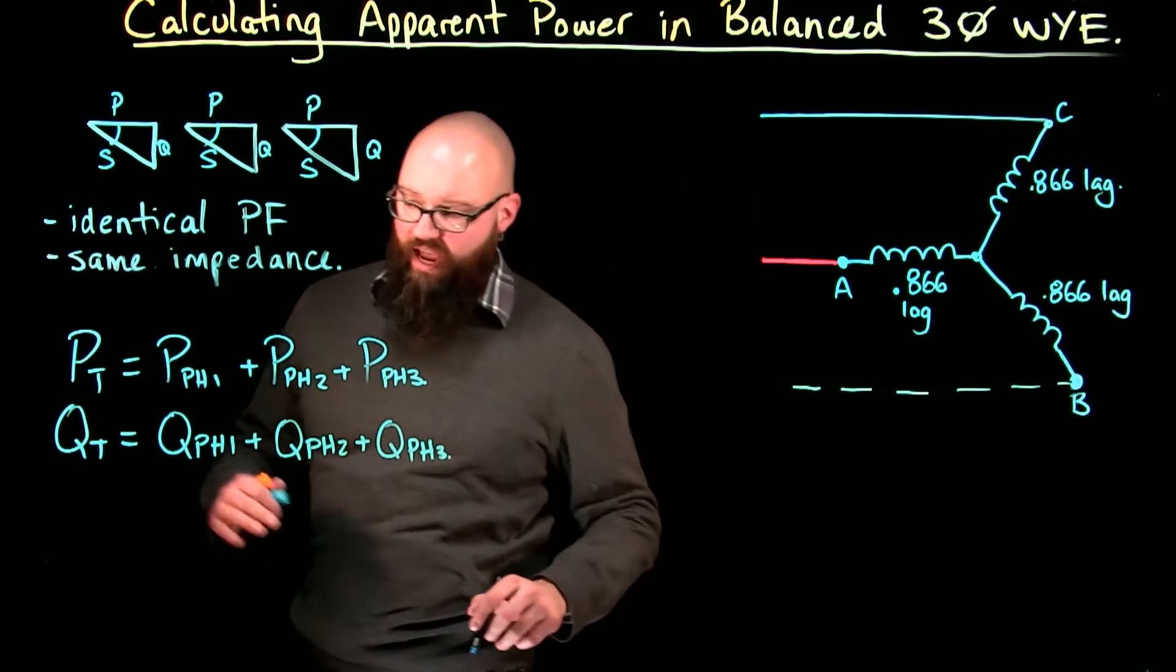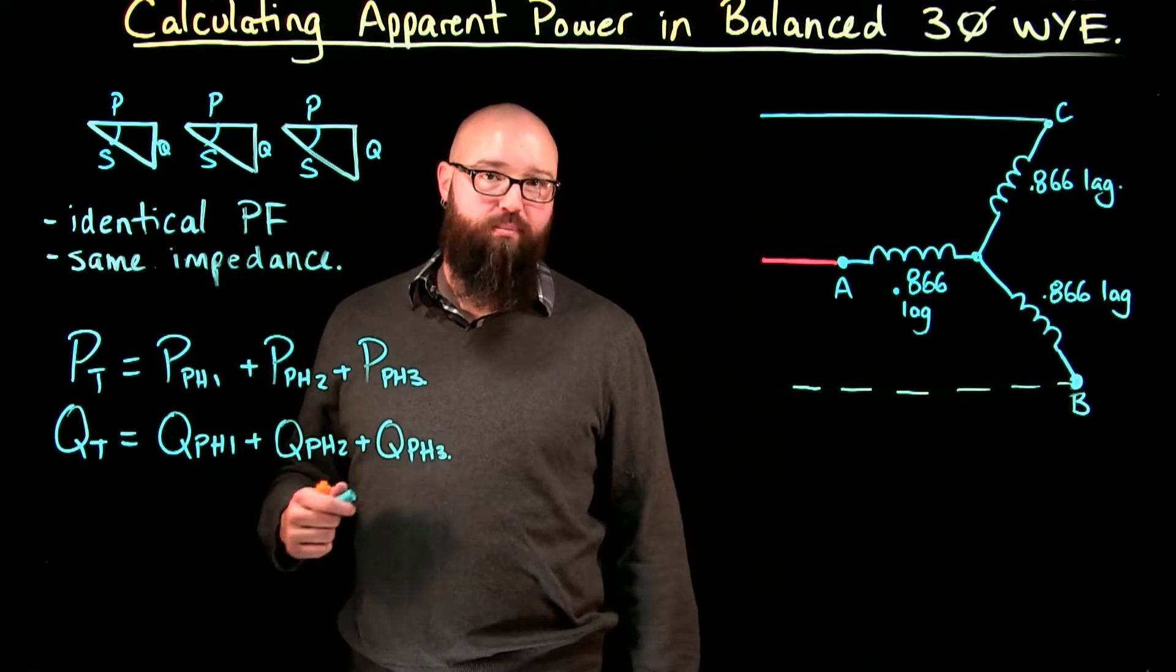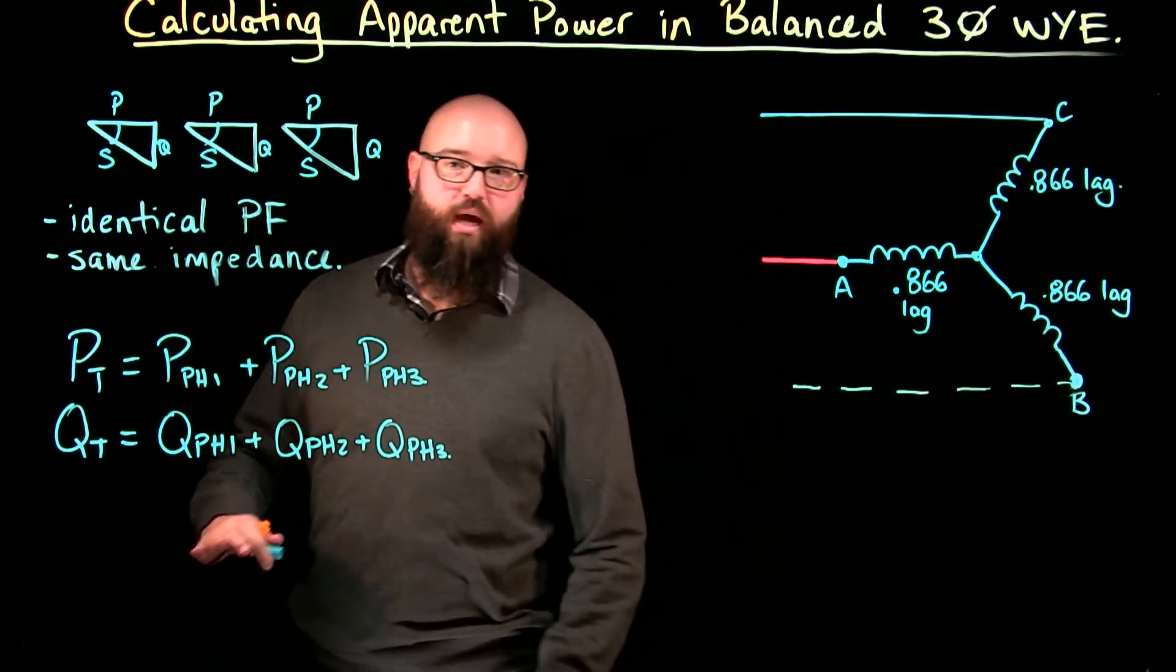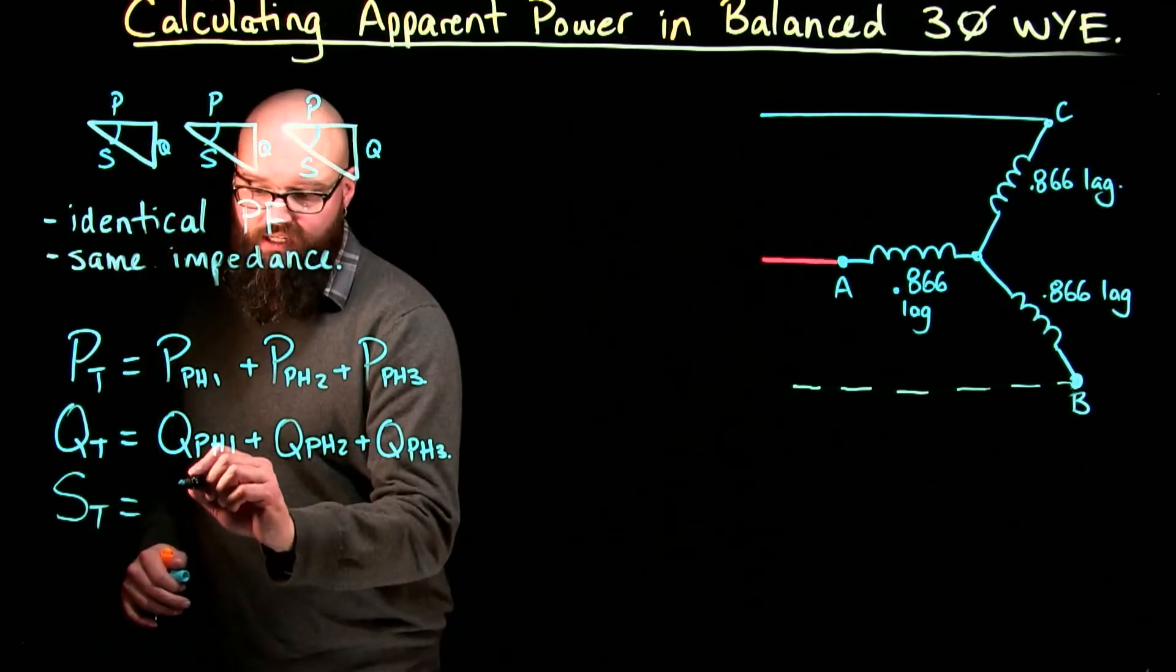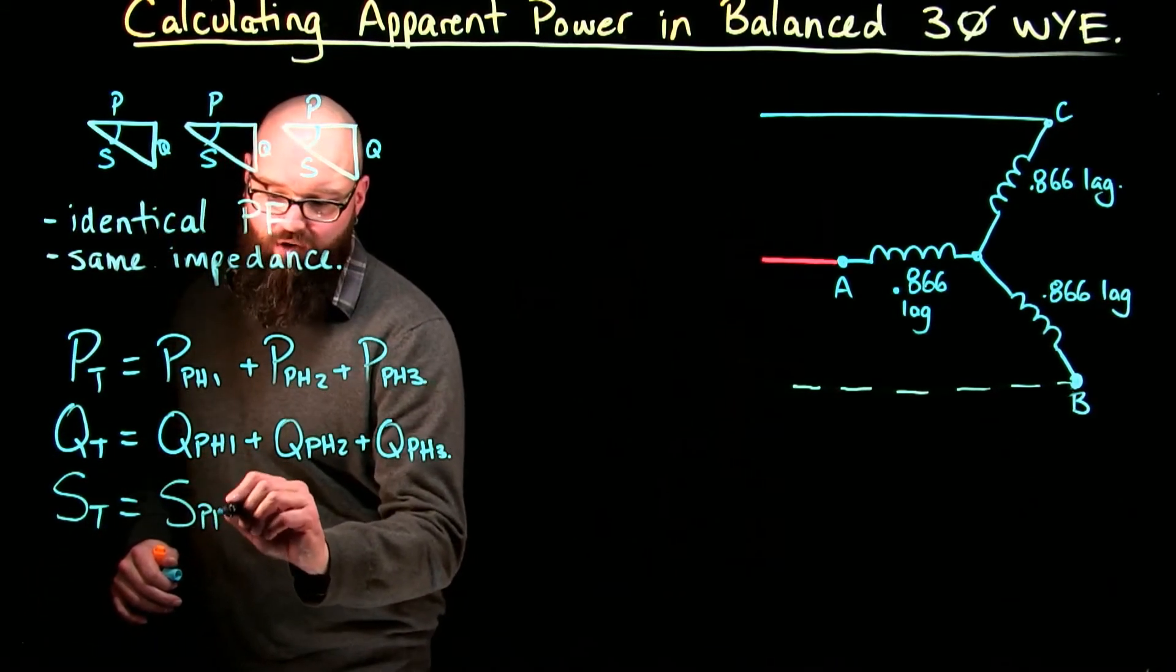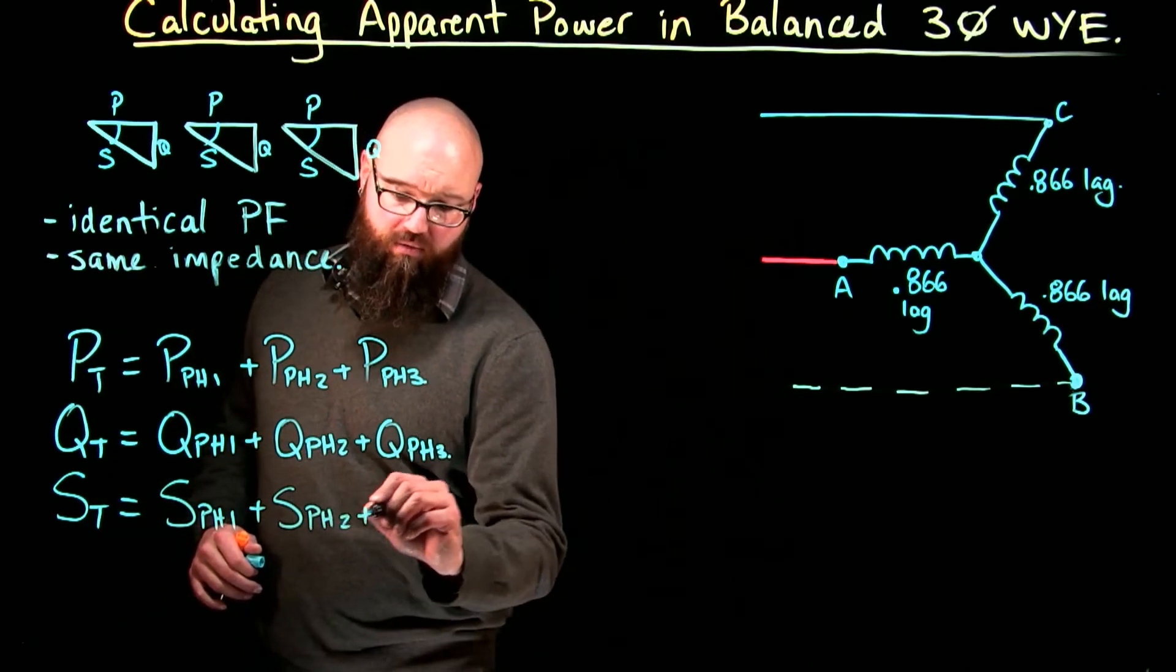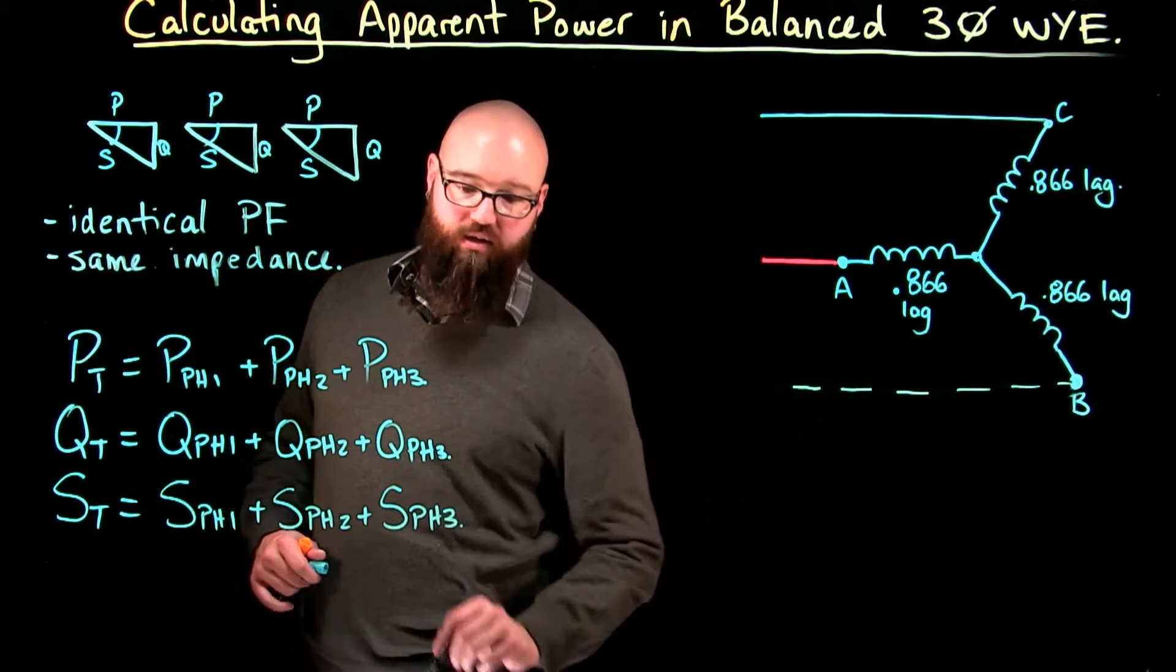And finally, because they're all at the same angle, it's safe to do this, and only because they're at the same angle. If they were different angles, I would not be able to do the following step. S total, our apparent power total, is the apparent power of phase one plus the apparent power of phase two plus the apparent power of phase three.